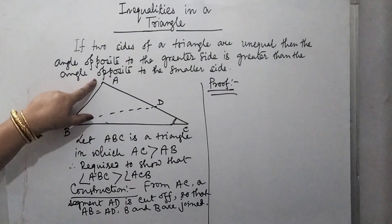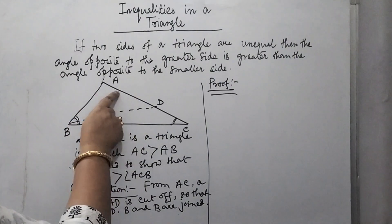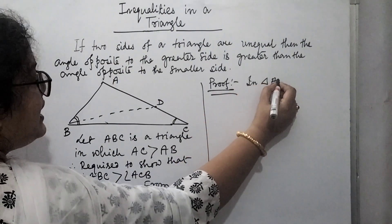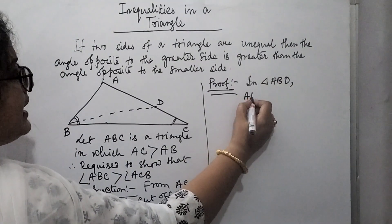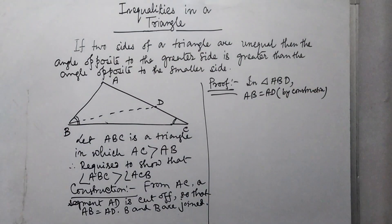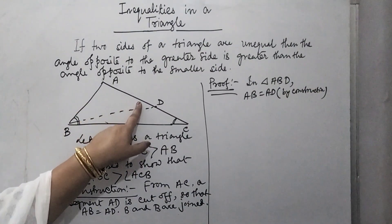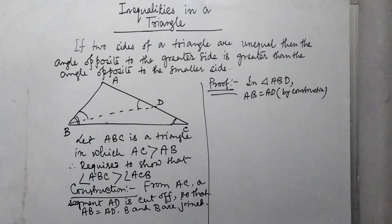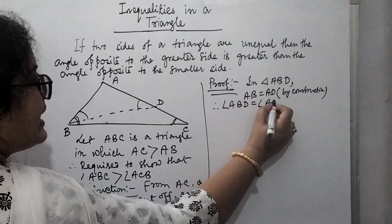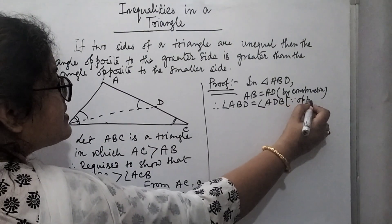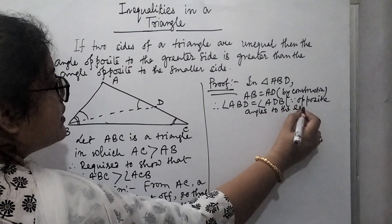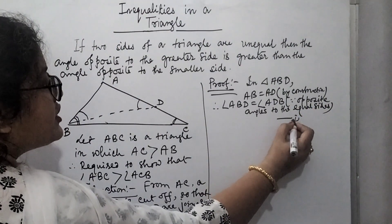In triangle ABD, we find that AB equals AD by construction. As these two sides are equal, the angles opposite to them will be equal in measurement. So angle ABD is equal to angle ADB, as they are opposite angles to the equal sides. Let's take this as relation number 1.